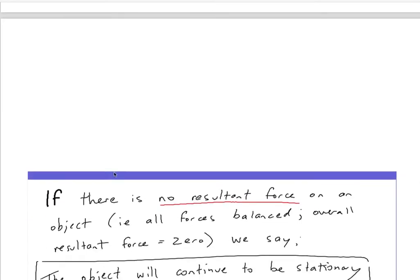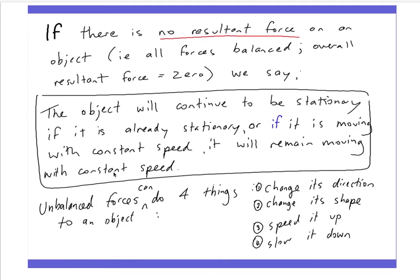Now here's some information. If there is no resultant force on an object, i.e. all forces are balanced, the overall resultant force is going to be zero. So the object will continue to be stationary if it is already stationary, or if it's moving with constant speed it will remain moving with constant speed.